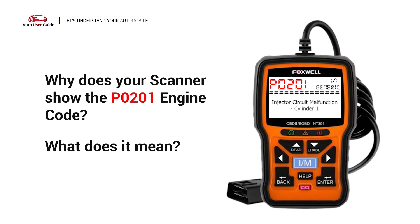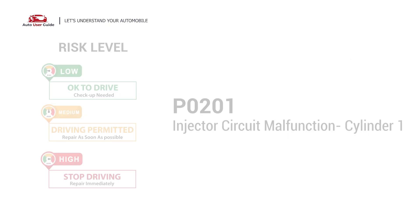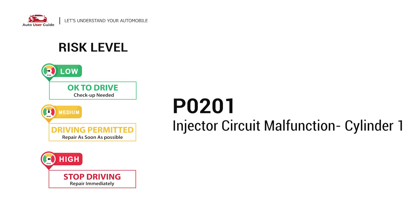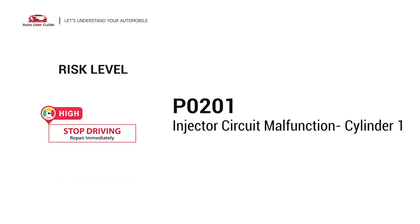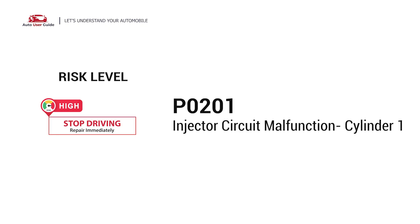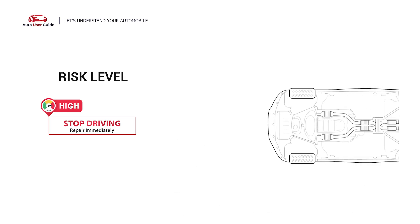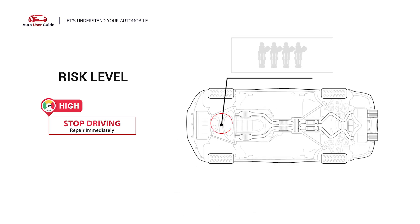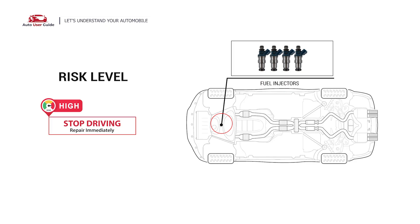Why does your scanner show the P0201 engine code? What does it mean? P0201 is a diagnostic trouble code for injector circuit malfunction at cylinder 1. It indicates that the PCM has detected an issue with the electrical circuit controlling the fuel injector on cylinder number 1.